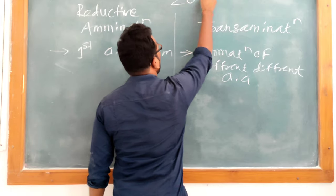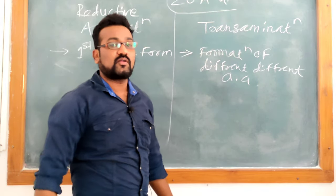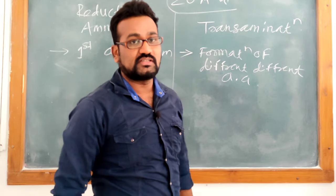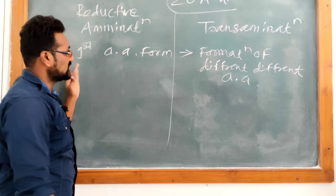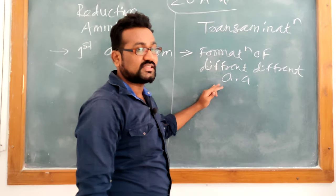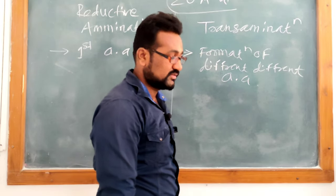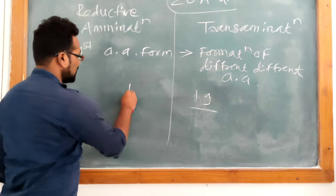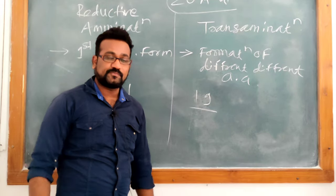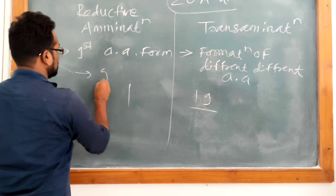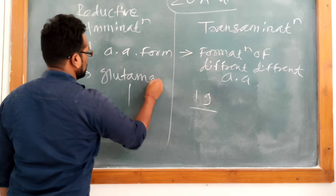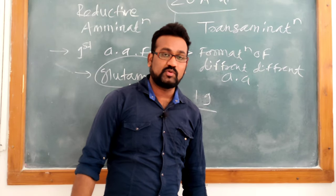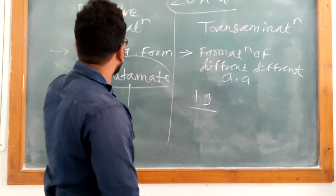There are 20 amino acids required for proper protein development in any organism. The first amino acid synthesis takes place in reductive amination, and in transamination different amino acids are synthesized — the remaining 19 amino acids. The first amino acid synthesized in reductive amination is very important. Please remember: the first amino acid is glutamate, which is synthesized in the process of reductive amination.